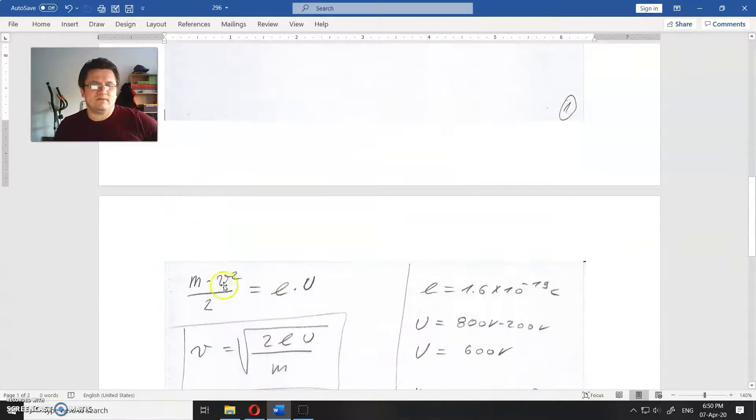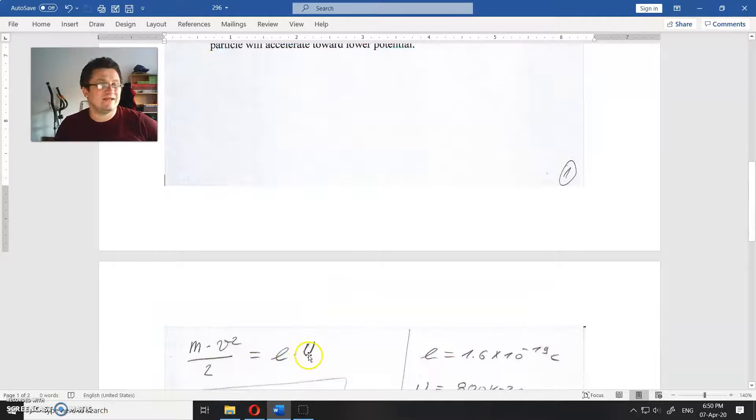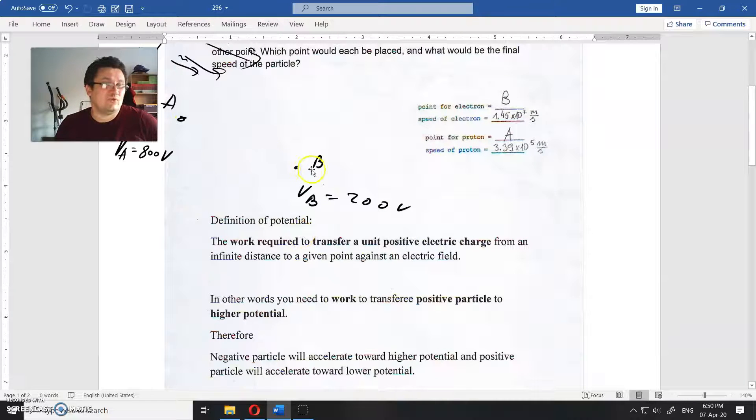The kinetic energy is equal to the potential energy. Potential energy is equal to the electric charge times the potential difference, or actually times the voltage. Potential difference is the voltage.